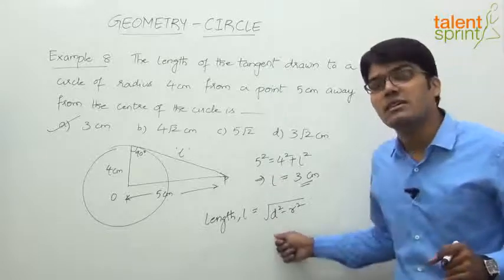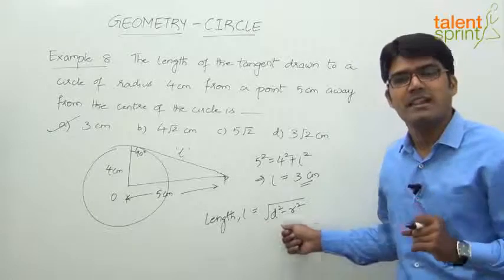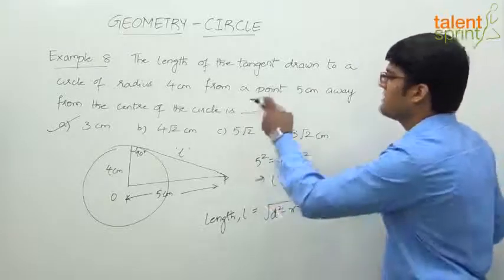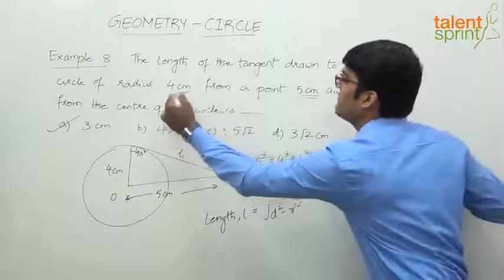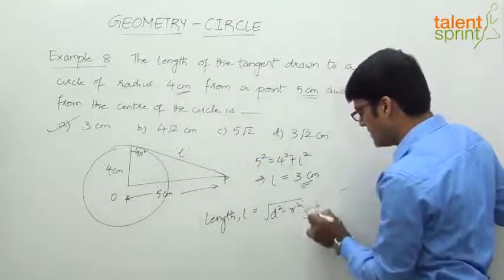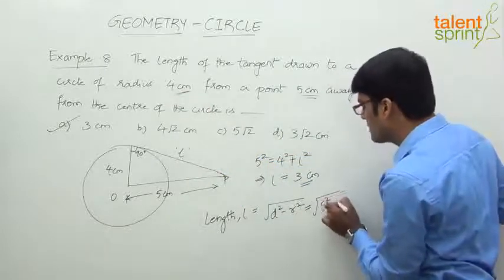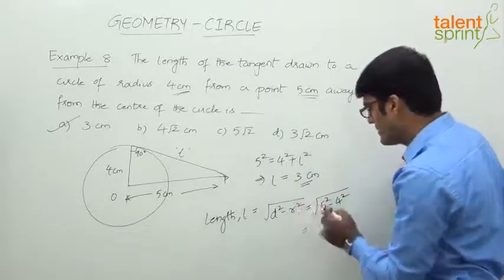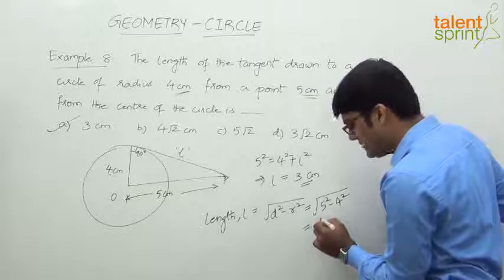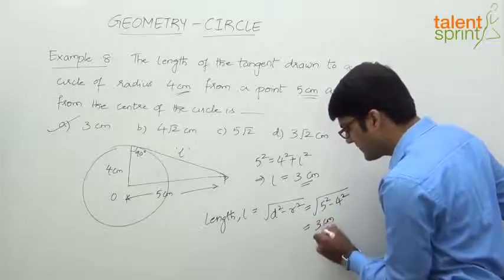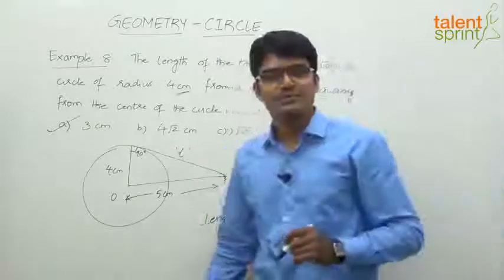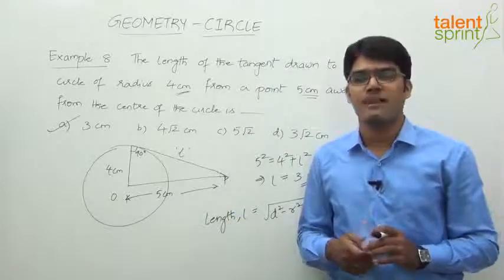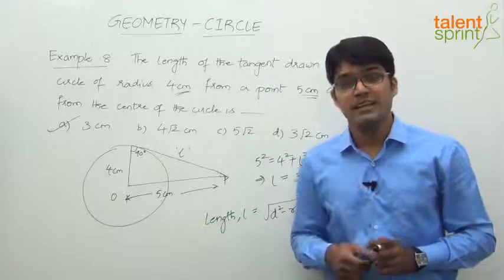Distance of the point from the center is 5 and radius is given as 4, so √(5² - 4²). It only looks to be simple but is nothing but the concept, whatever we have done there. So 25 - 16 = 9, square root of 9 is 3 centimeters, which is option a. Very simple question on finding out the length of the tangent. Let's now quickly take the next example.